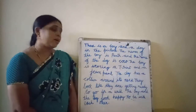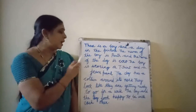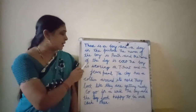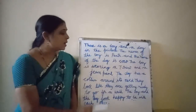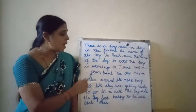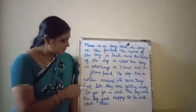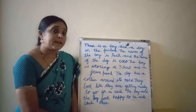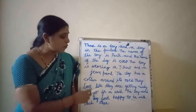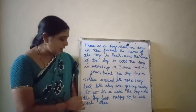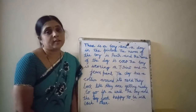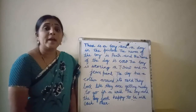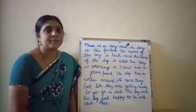A boy and a dog are in the picture. The name of the boy is Parth and the name of the dog is Coco. The boy is wearing a T-shirt and a jeans pant. The dog has a collar around its neck. They look like they are getting ready to go for a walk. The boy and the dog look happy to be with each other. Now all of you copy down in your workbook.